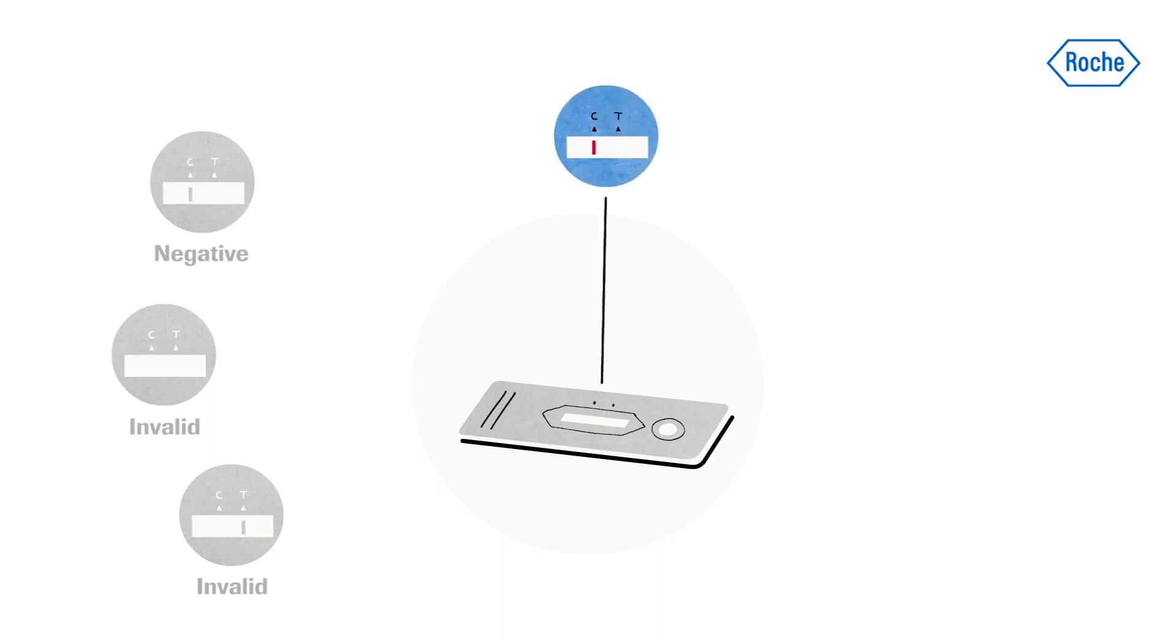In the case of a positive result, a colored line appears in the lower section of the result window. This is the test line T. Even if the test line is very faint or not uniform, the test result should be interpreted as a positive result.